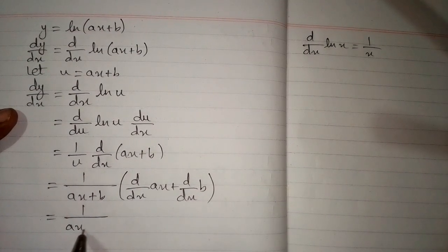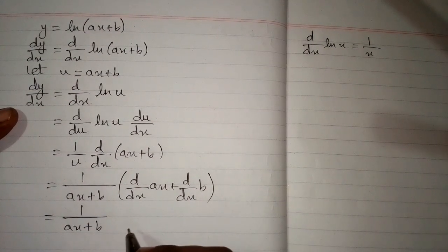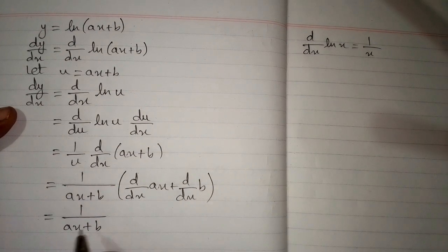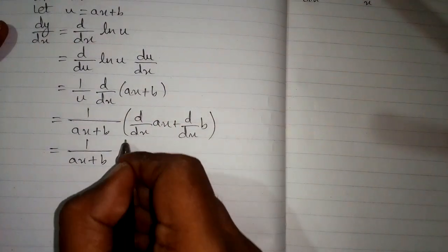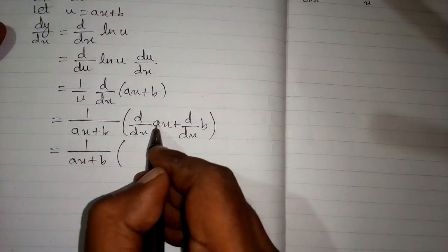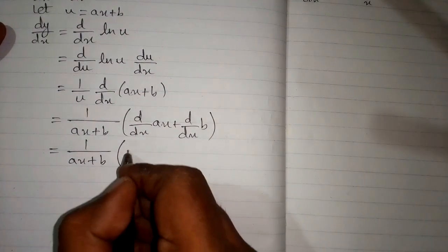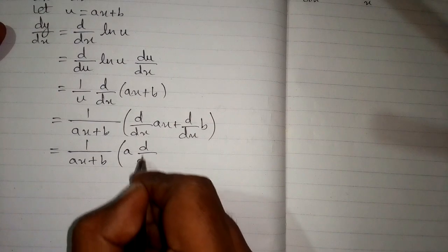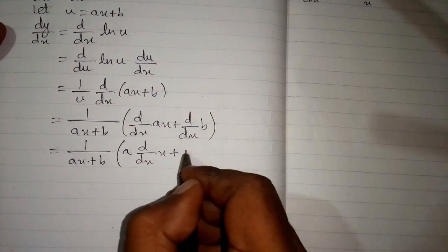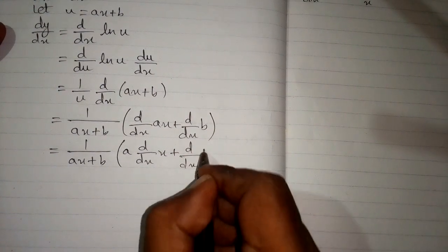Now we have 1 upon ax plus b. And here the coefficient of x can be written before the derivative. So we have a times d/dx of x plus d/dx of b.